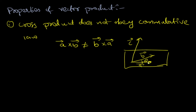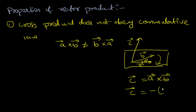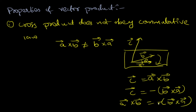If the direction of vector A-bar is from A to B, then C-bar equals A-bar cross B-bar. But if the direction of B-bar is from B to A, then the vector is equal to minus B-bar cross A-bar. This minus sign indicates that the vector product A cross B is opposite in direction to B cross A, so the cross product doesn't obey the commutative law.